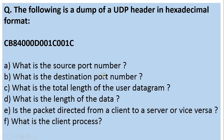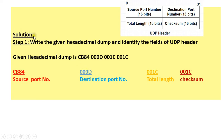There are some steps to be followed to solve such examples. In the first step, we have to write the given hexadecimal dump and identify the fields of the UDP header. The UDP header has 4 fields, each of 16 bits. The first field is source port number, the second is destination port number, the third is total length — which is the length of the UDP header plus the data — and the fourth field is the checksum field, used to verify the integrity of the header as well as the data.